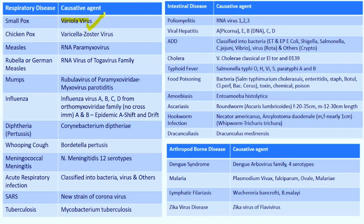Smallpox is caused by variola virus; chickenpox by varicella zoster virus; measles by RNA paramyxovirus; rubella or German measles by RNA virus of the togavirus family; mumps by rubulavirus of Paramyxoviridae — myxovirus parotiditis; influenza is caused by influenza virus A, B, C, D from the Orthomyxoviridae family. There is no cross-immunity between A, B, C, D. A and B cause epidemics; A is responsible for antigenic shift and drift causing pandemics.